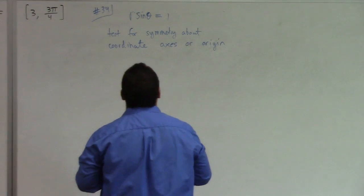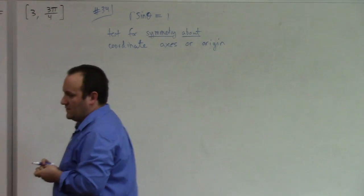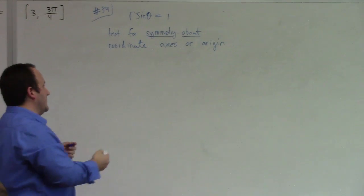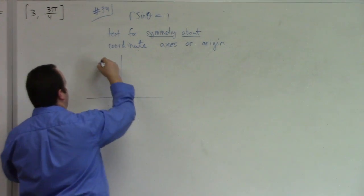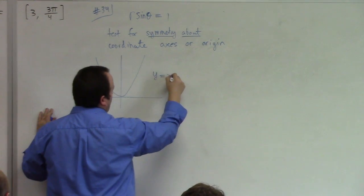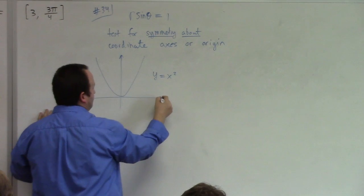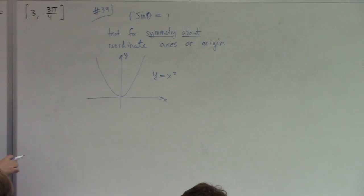Okay, so here we're looking at r sine theta equals to 1. We're supposed to analyze r sine theta equals to 1, and what are we supposed to figure out about it? Test the curve for symmetry about the coordinate axes, or for symmetry about the origin.